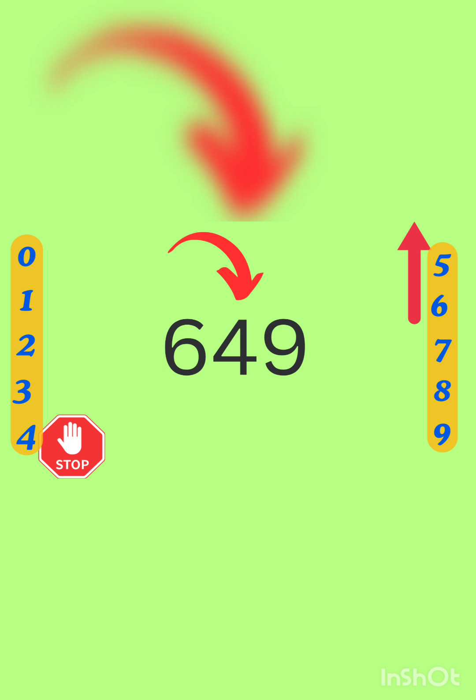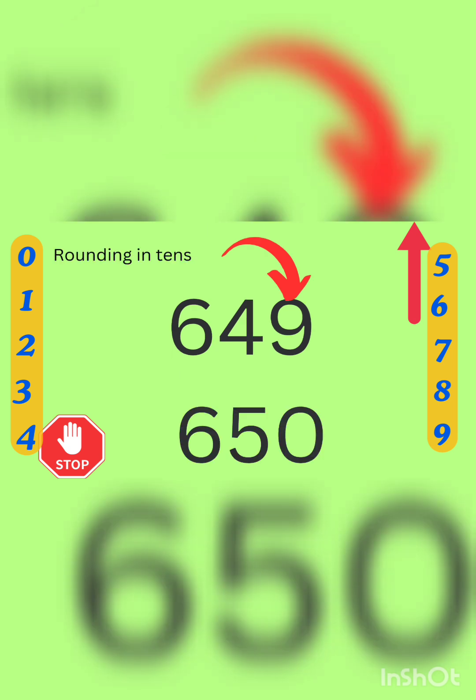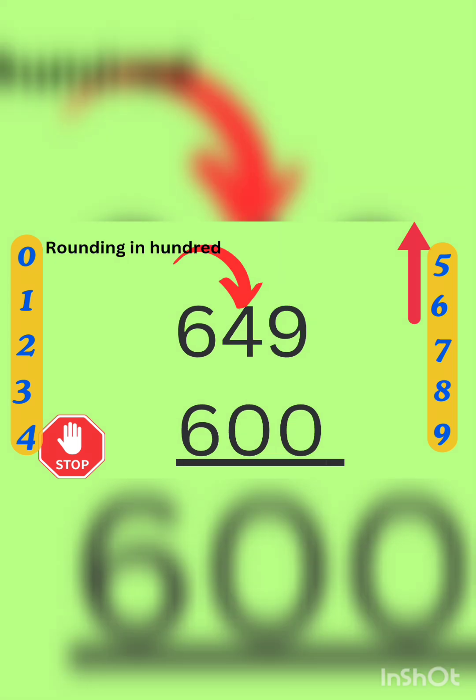Our next number is 649. Now there are two situations. Number 1, rounding in tens. If you are rounding in tens, look at the number given in one place. It's 9, so we will definitely move to the next number, 650.